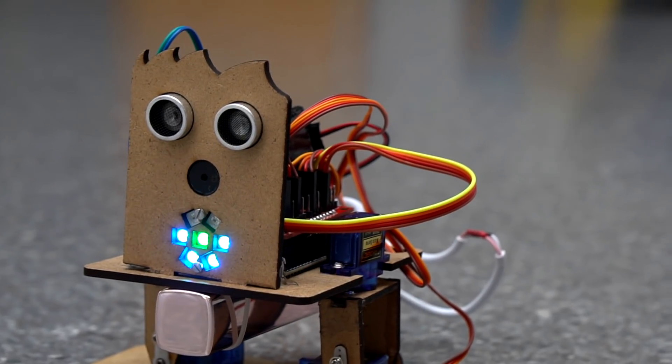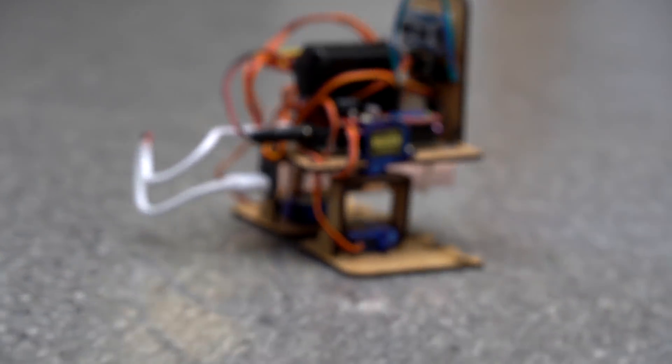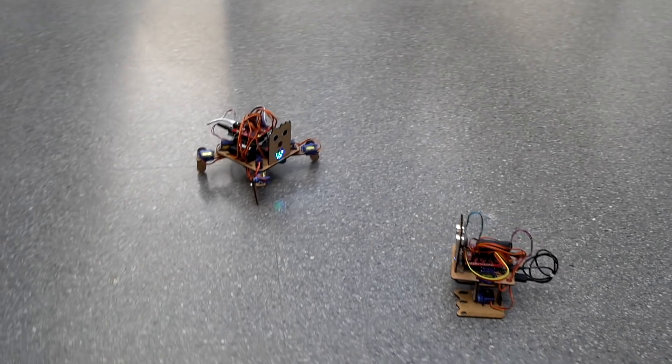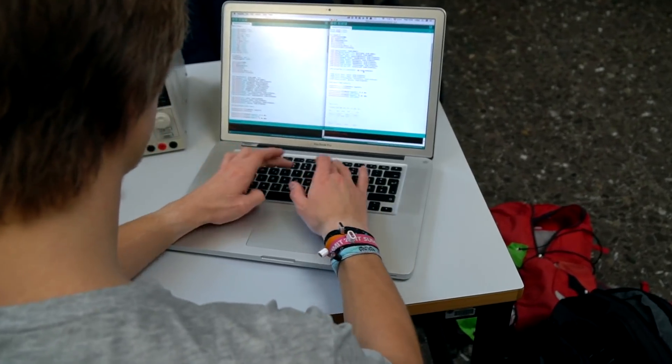The robots also come with a cute mouth, buzzer and an ultrasonic sensor. Make them smile, dance, wave or detect obstacles and learn how programming works in the process.